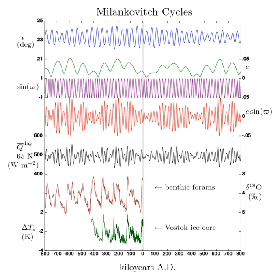In addition, the rotational tilt of the Earth changes slightly. A greater tilt makes the seasons more extreme. Finally, the direction in the fixed stars pointed to by the Earth's axis changes, while the Earth's elliptical orbit around the Sun rotates. The combined effect is that proximity to the Sun occurs during different astronomical seasons. Milankovitch studied changes in these movements of the Earth, which alter the amount and location of solar radiation reaching the Earth. This is known as solar forcing.